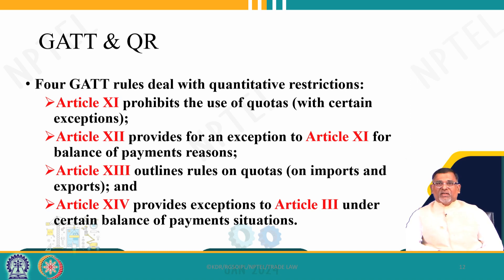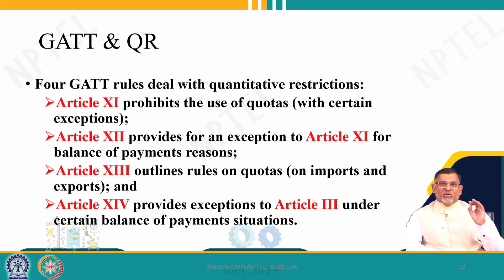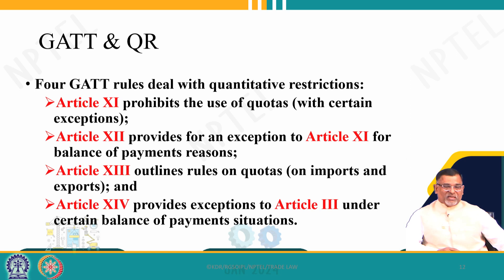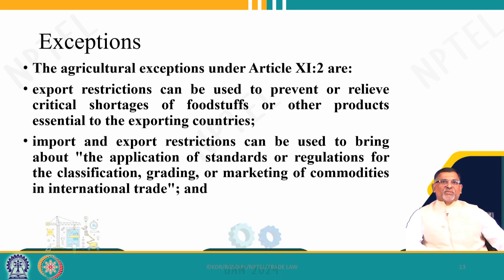Most importantly, Article 13 provides that import and export quotas are abolished. Quotas can only be imposed in two situations: first, when they are abolished as required; and second, during balance of payment problems or situations. Otherwise, they are completely banned under the GATT provisions. Article 11.2 says that export restrictions can be used to prevent or relieve critical shortages of foodstuffs or other products essential to the exporting countries.